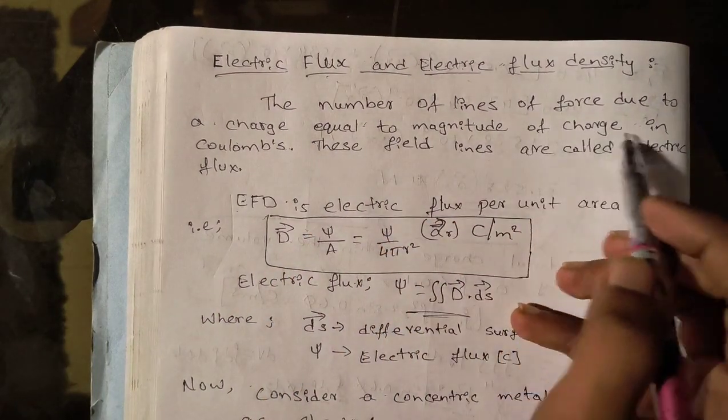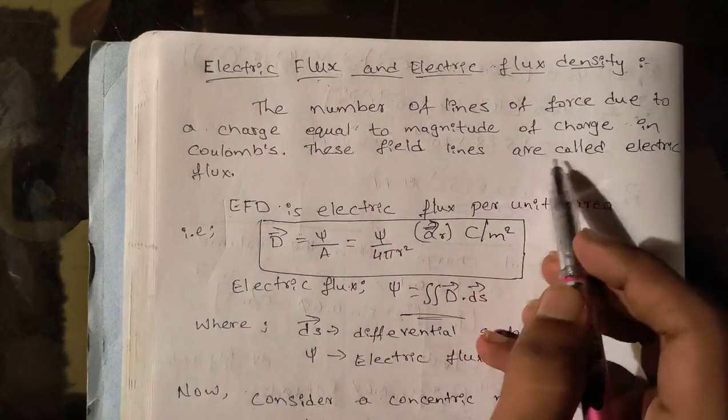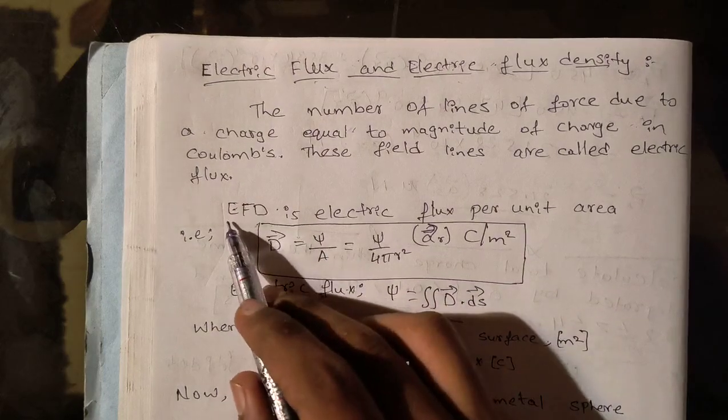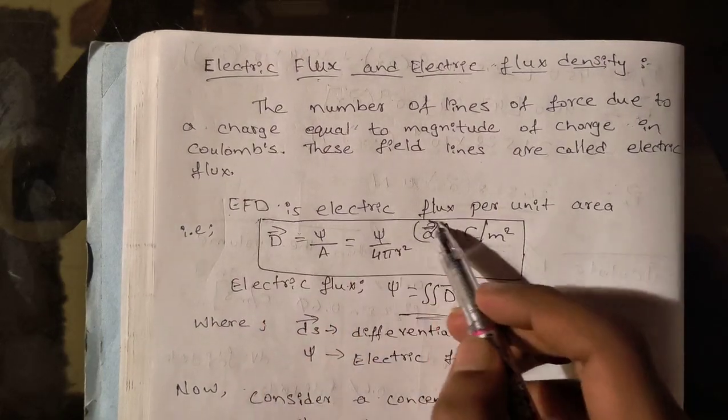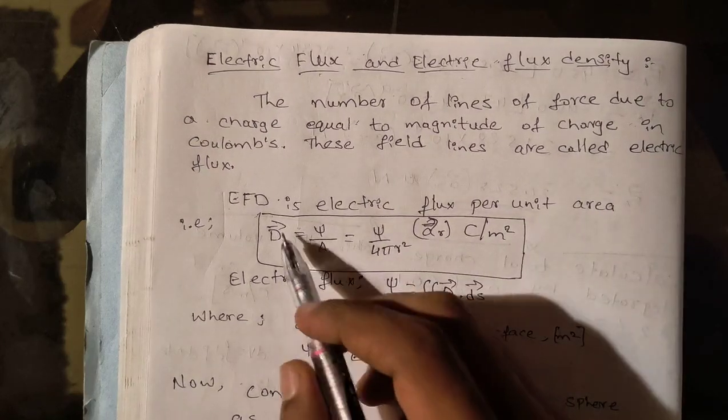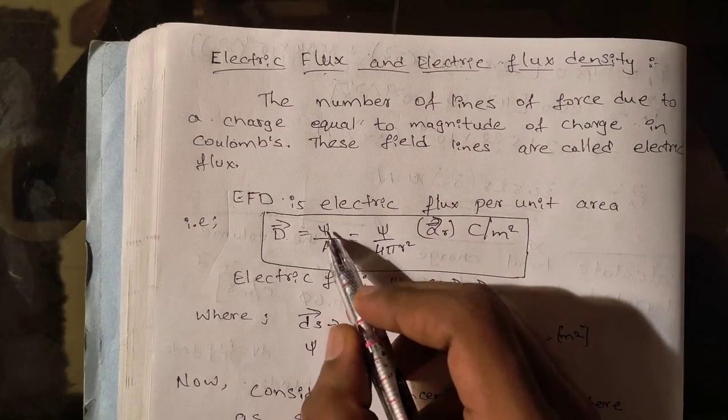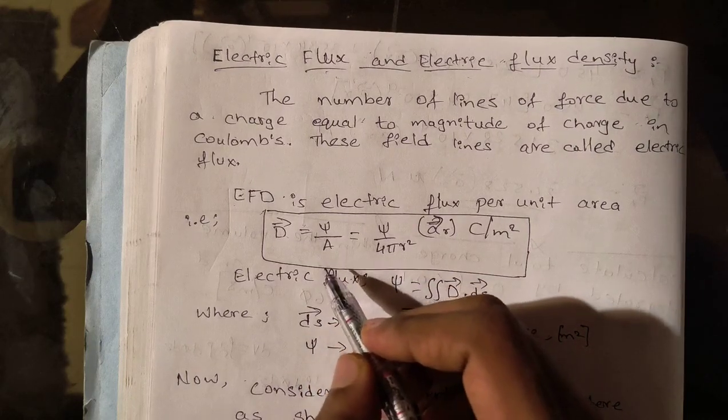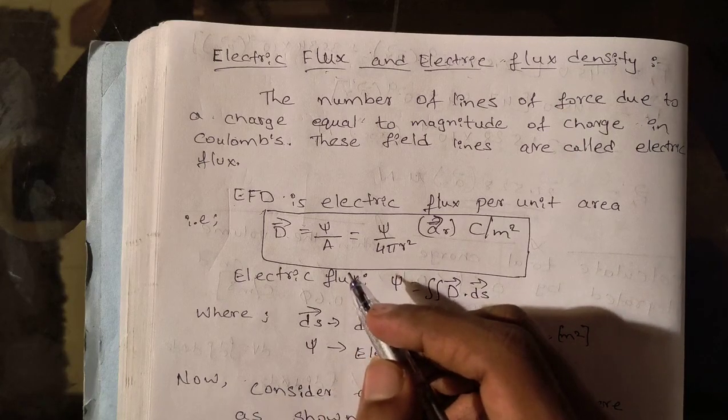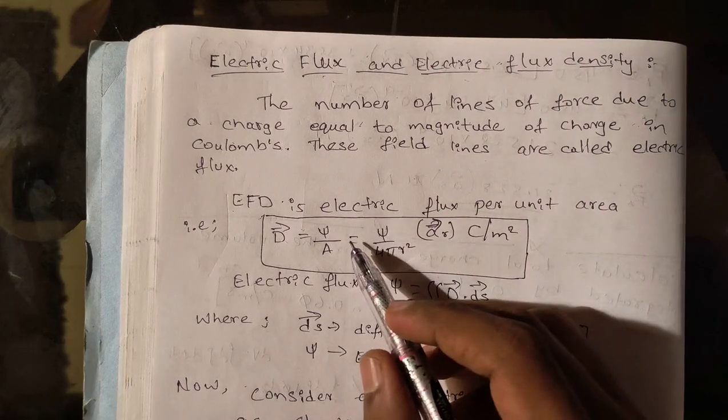The number of lines of force due to a charge equal to magnitude of the charge in Coulomb, and these field lines are called electric flux. Electric flux density is electric flux per unit area. It is denoted by D vector equals Ψ by A, where A is the area.